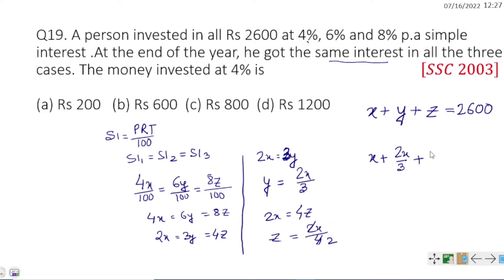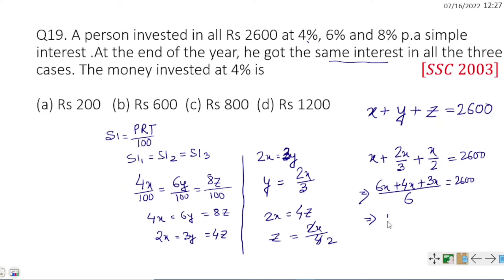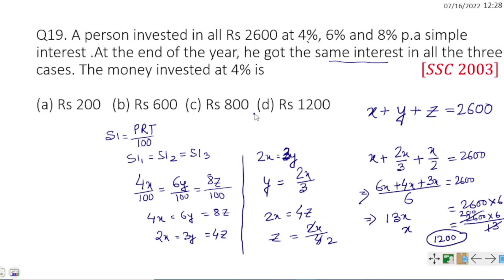Substituting into x + y + z = 2600: x + 2x/3 + x/2 = 2600. This gives 6x/6 + 4x/6 + 3x/6 = 2600, so 13x/6 = 2600, meaning 13x = 15600, and x = 1200. The answer is Rs. 1200.